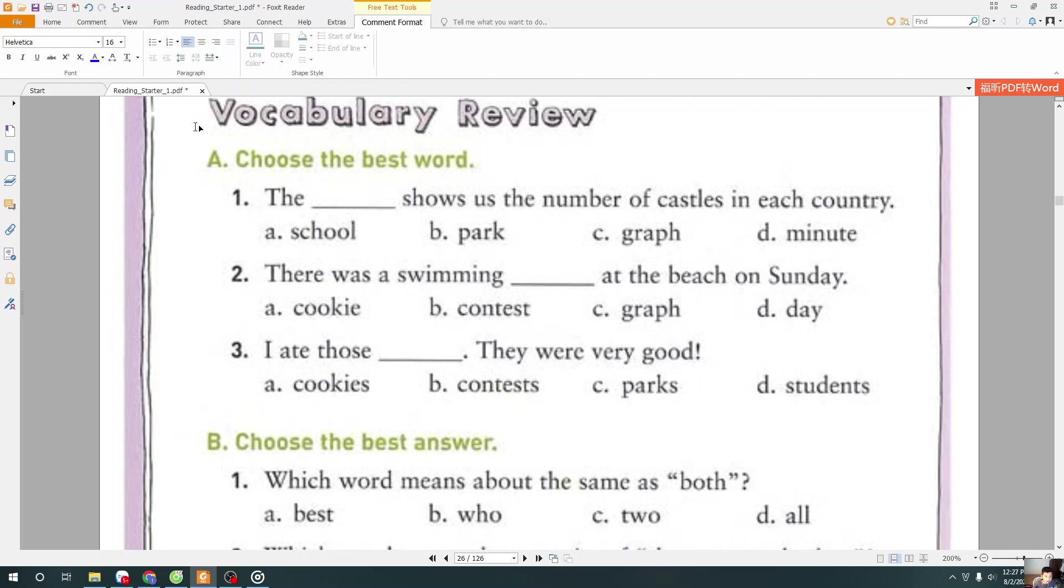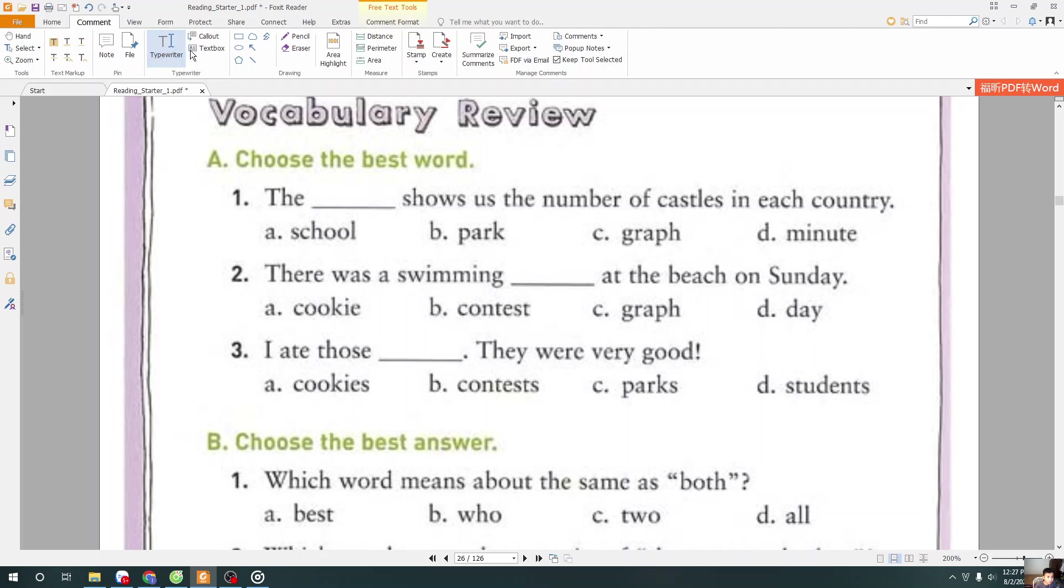And we will go to the next exercise in vocabulary review. And A. We will go to part A. When we move on to part A, we have to choose the best word. And section 1. The graph shows us the number of castles in each country. I choose C, graph. Next sentence. There was a swimming contest on the beach on Sunday. I choose B, contest. And sentence 3. I ate those. I choose A, cookies. They were really good.